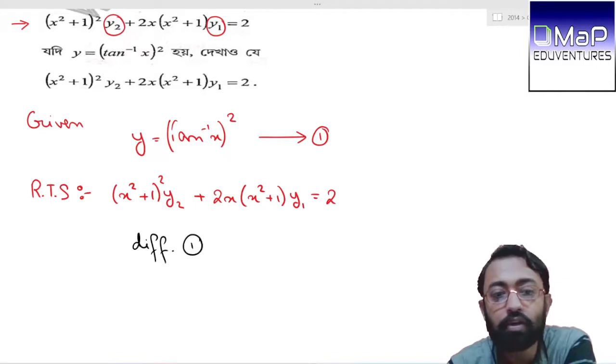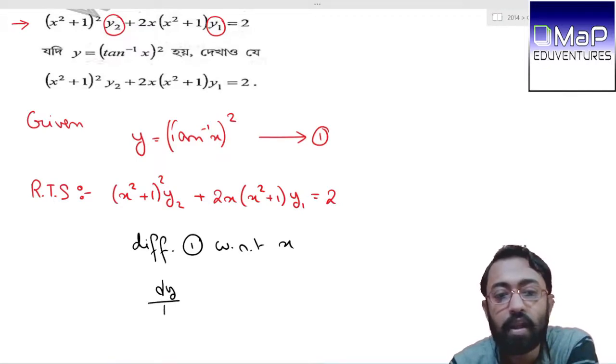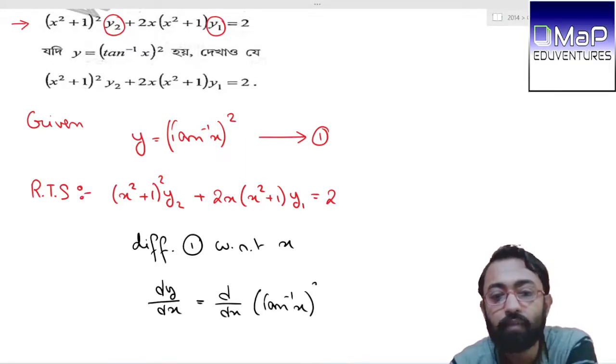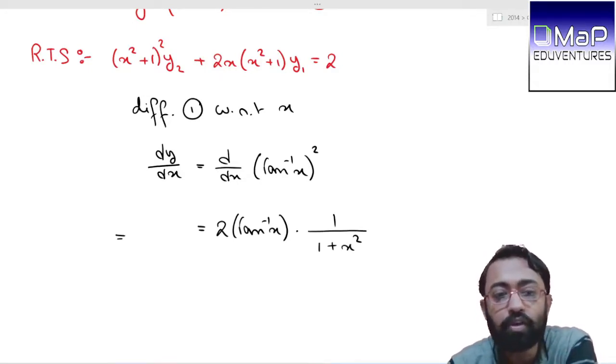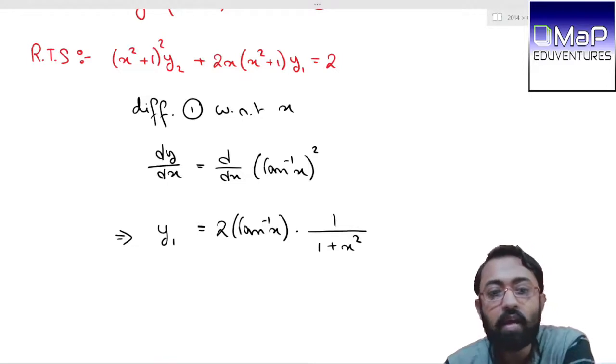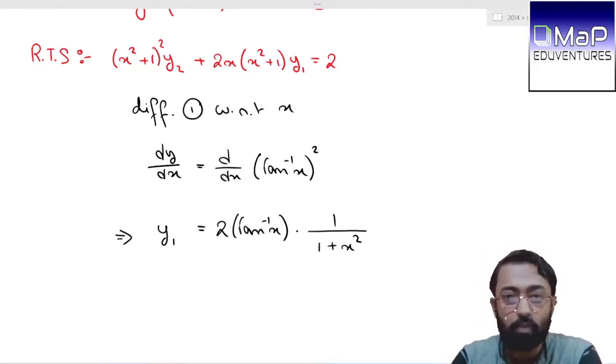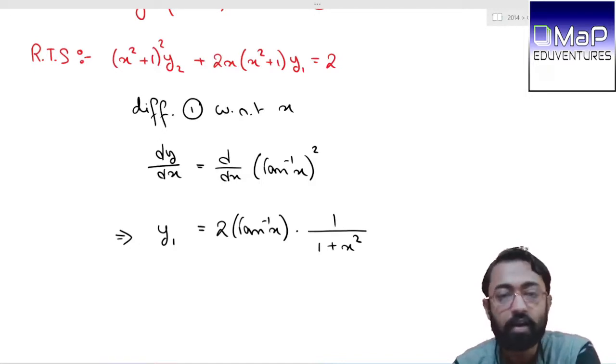Now let us start. Differentiating equation 1 with respect to x, dy/dx equals d/dx of tan inverse x whole square. Using the result, this will be 2 times tan inverse x multiplied by d/dx of tan inverse x, which gives us 2 tan inverse x times 1 over 1 plus x square. Since the question indicates y1 and y2, let us change dy/dx to y1. We got the first order derivative.